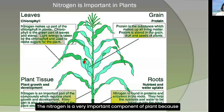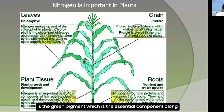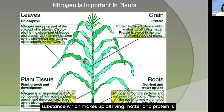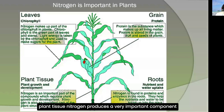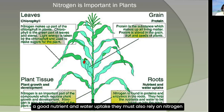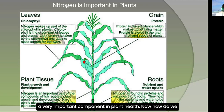Nitrogen is a very important component in plants because it is the main component of chlorophyll — the green pigment essential for producing plant food through photosynthesis. Protein, which makes up all living matter, is stored in grains, fruits, and seeds of plants. Nitrogen is also critical for root function, enabling good nutrient and water uptake.